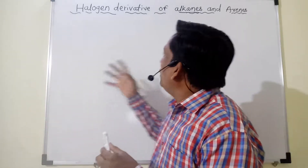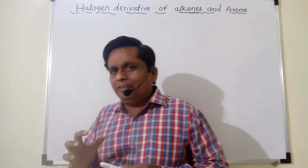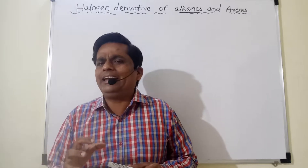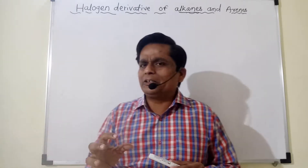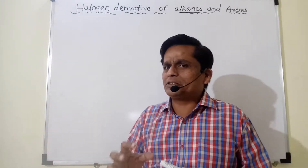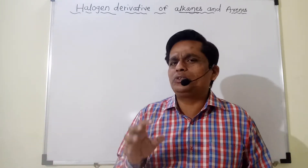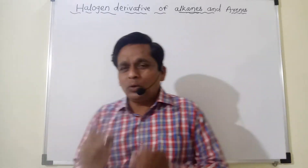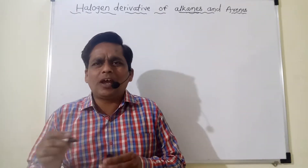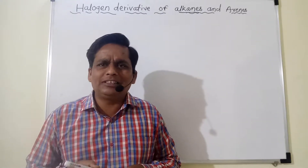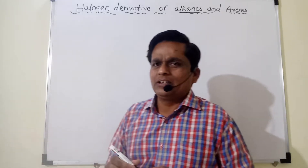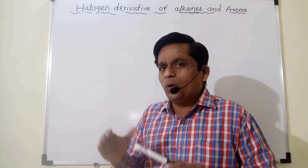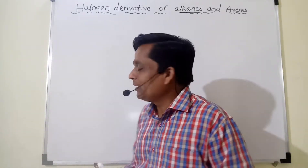So what are the halogen derivatives? If, from any alkane, a hydrogen atom is replaced by a halogen group — you know some halogens: chlorine, bromine, iodine, and fluorine — these are some halogens. So now we see how a halogen derivative will be formed.